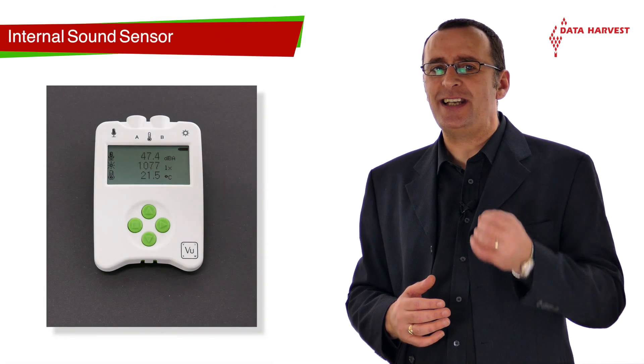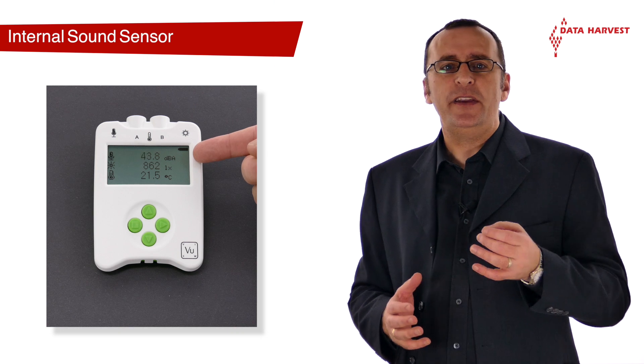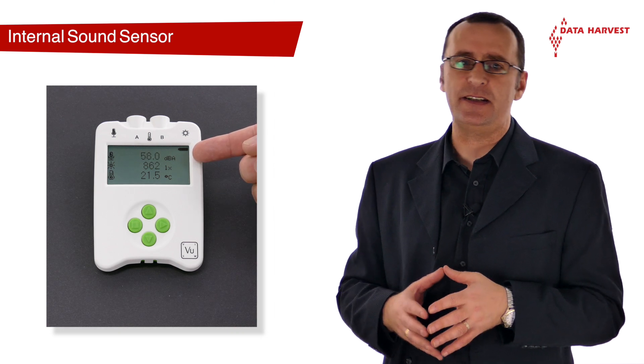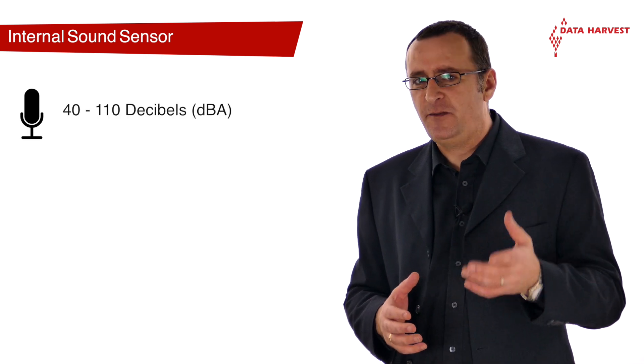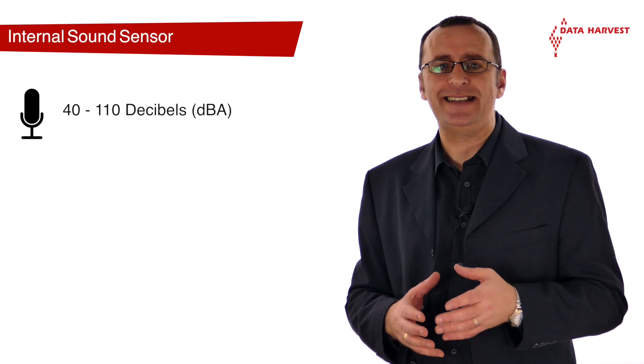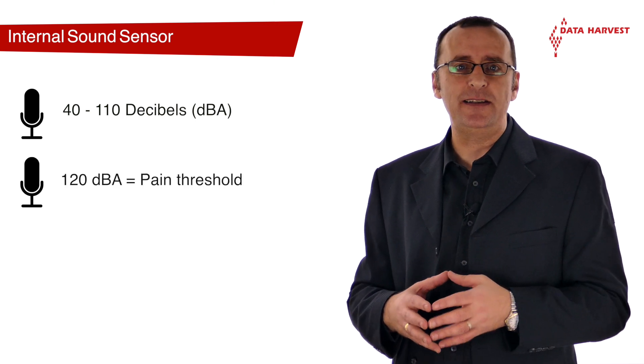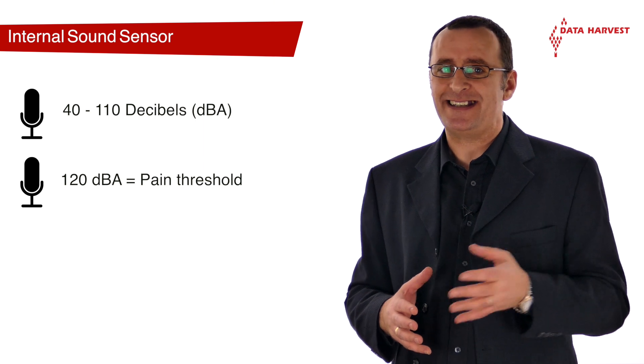The sound sensor measures loudness in decibels, with an adjustment to reflect the human ear's response to different frequencies. The range starts at 40 decibels, the quietest sound normal hearing detects, and goes up to a maximum of 110, 120 decibels being the threshold of pain for sound levels.